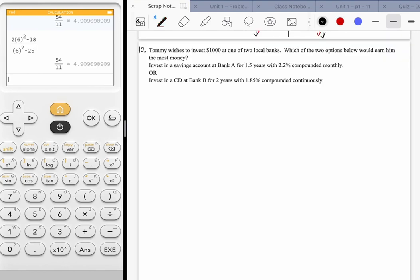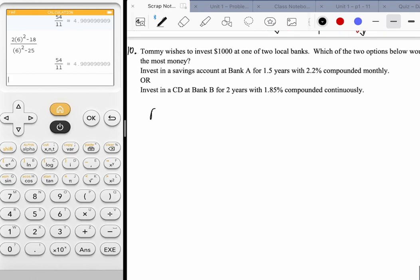A little compound interest. Tommy wishes to invest $1,000 in one of two local banks. Which would give them the most money? Bank A is compounded monthly. So I'm going to use A equals P times (1 + R/N) to the Nt power. Bank B is continuously. So that's A equals Pe^(Rt).